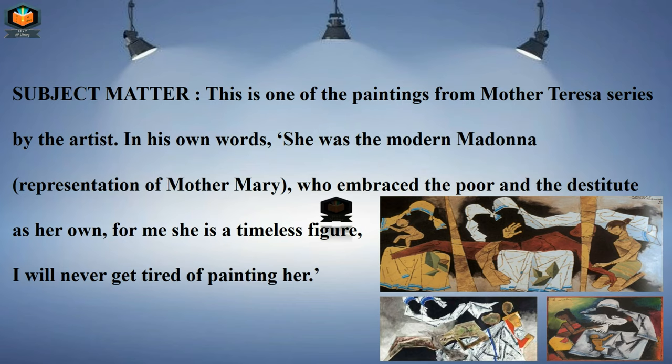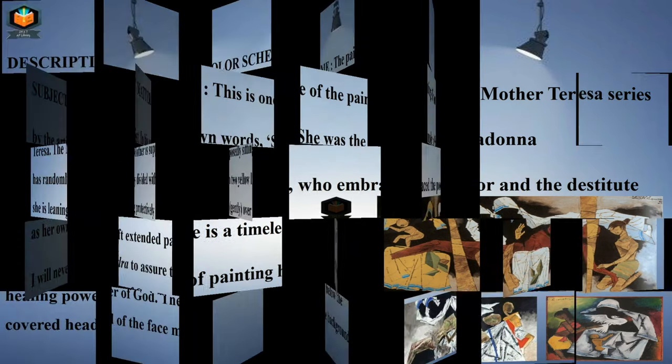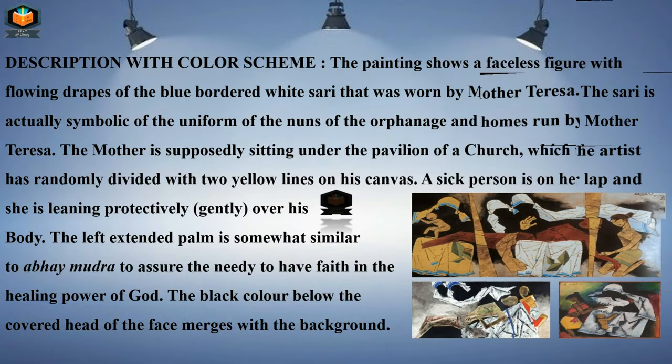The painting shows a faceless figure with a flowing dress and a distinct color scheme. There is a shining, transparent-looking pink dress and a plain composition shown in the background.